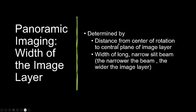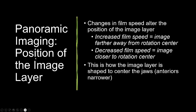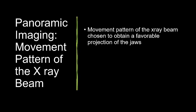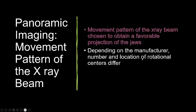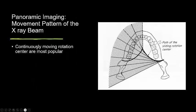The width of the image layer is determined by the distance from the center of rotation to the central plane of the image layer, and by the width of the long narrow slit beam — the narrower the beam, the wider the image layer. Regarding position: changes in film speed alter the position of the image layer. Increased film speed moves the image farther from the rotation center; decreased film speed moves it closer. The focal trough is narrow in the anterior region and wider in the posterior region. Continuously moving rotation centers are now most commonly used.